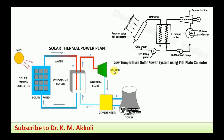The vapor of the secondary fluid is expanded in a turbine. After expansion, power generation takes place — the turbine shaft is connected to a generator, which generates electricity. The expanded vapor is then condensed in a condenser using a cooling tower, similar to a thermal power plant. The condensed fluid is recirculated back to the evaporator or boiler, and this cycle continues to generate electricity using a solar power pond.